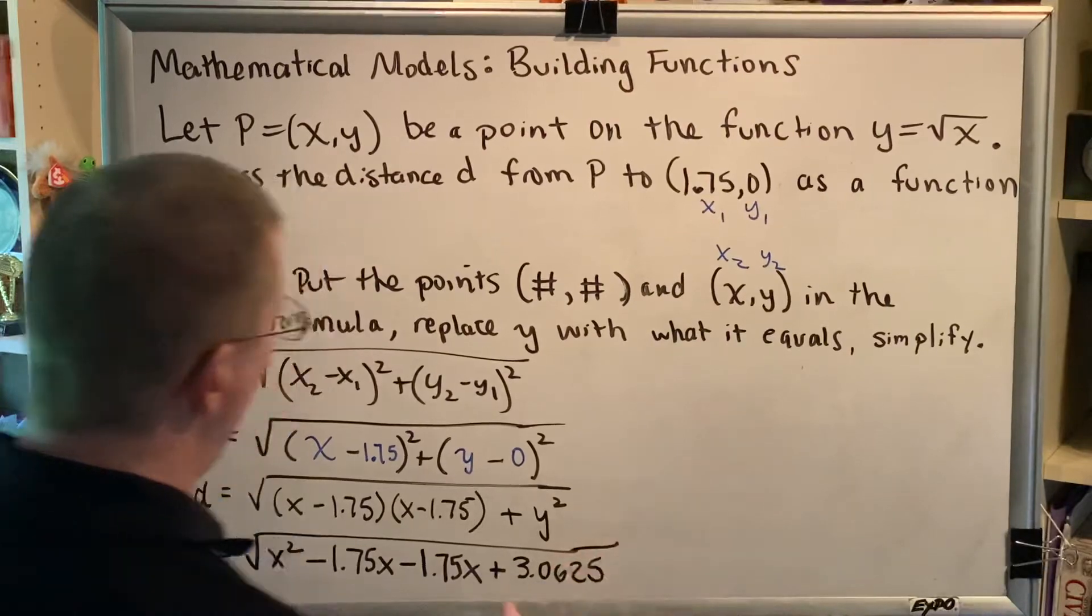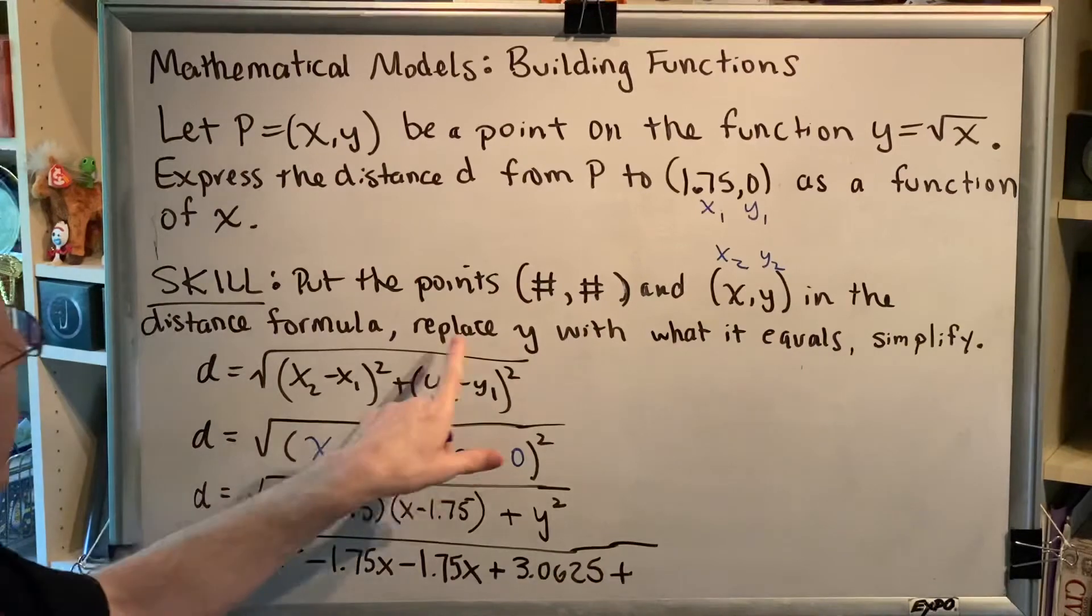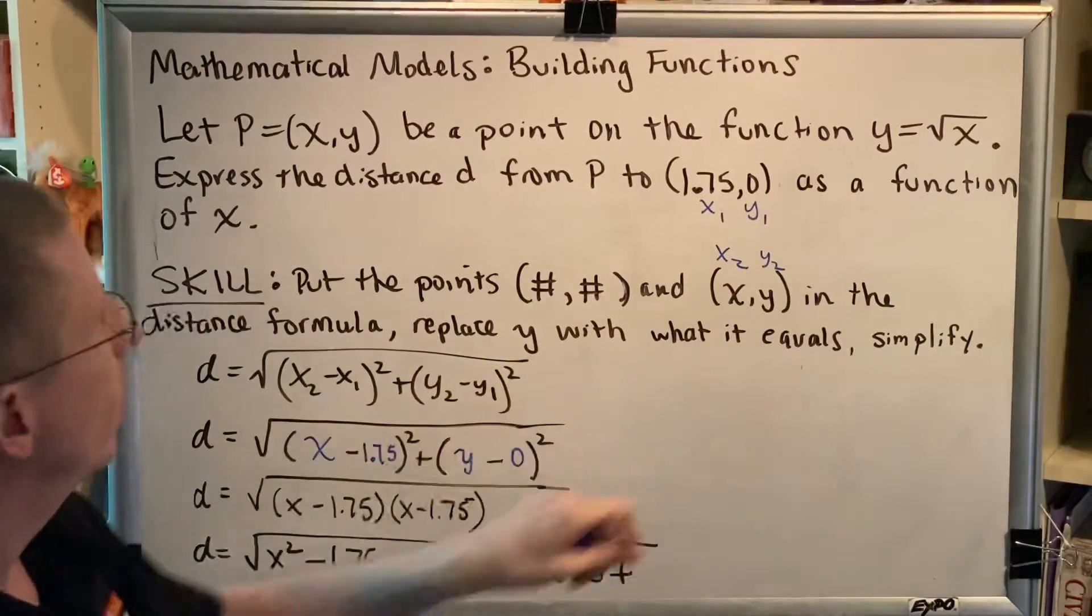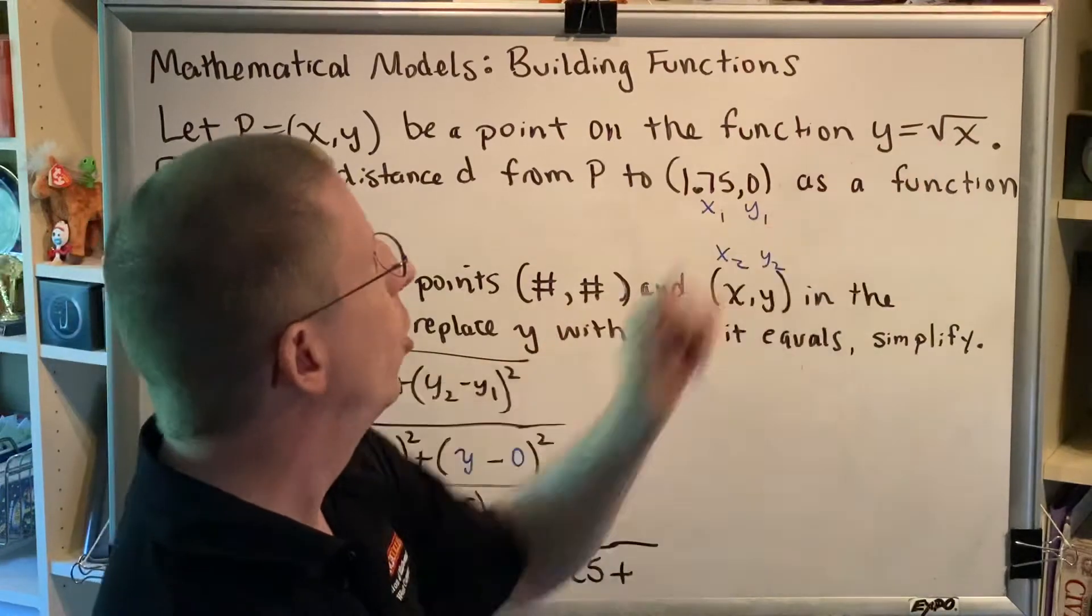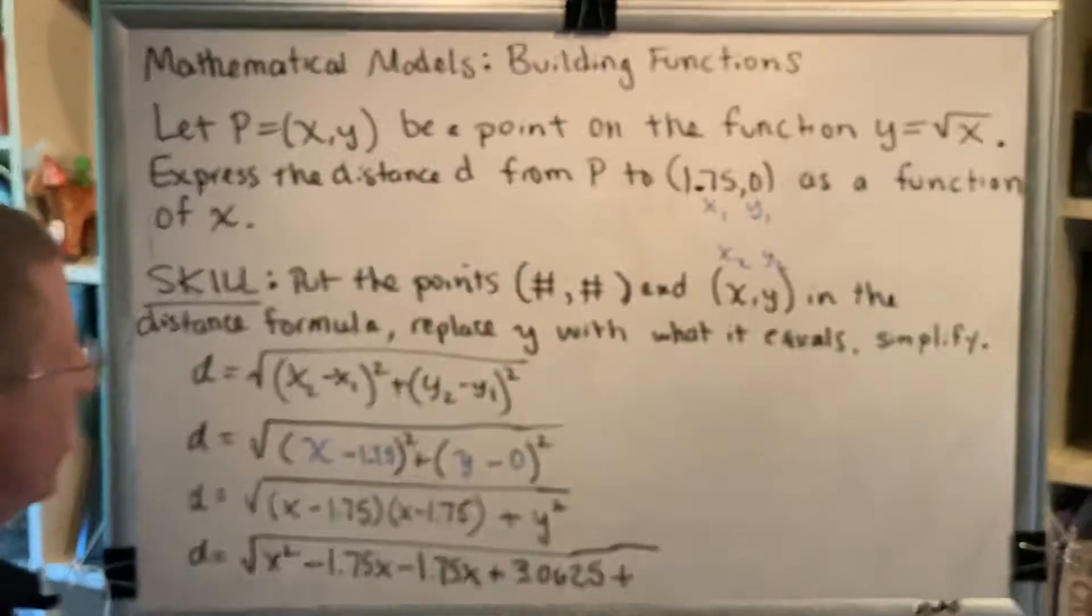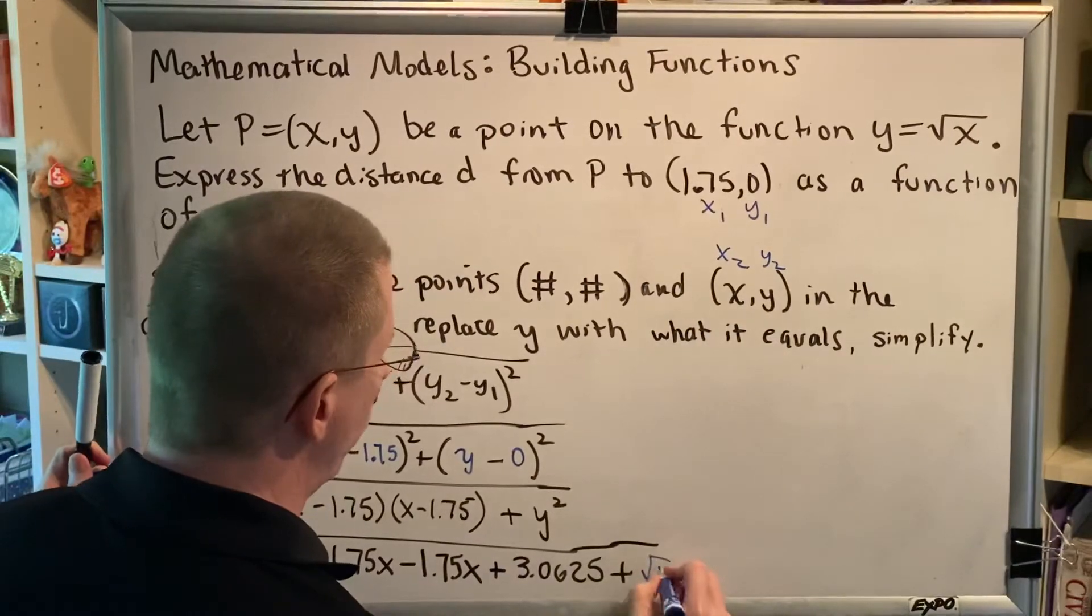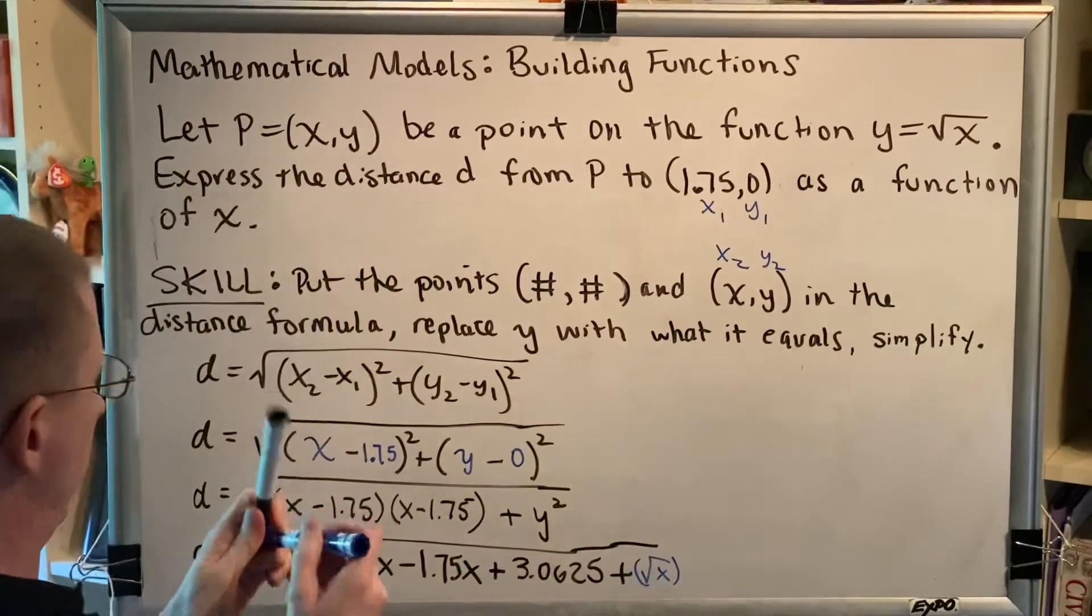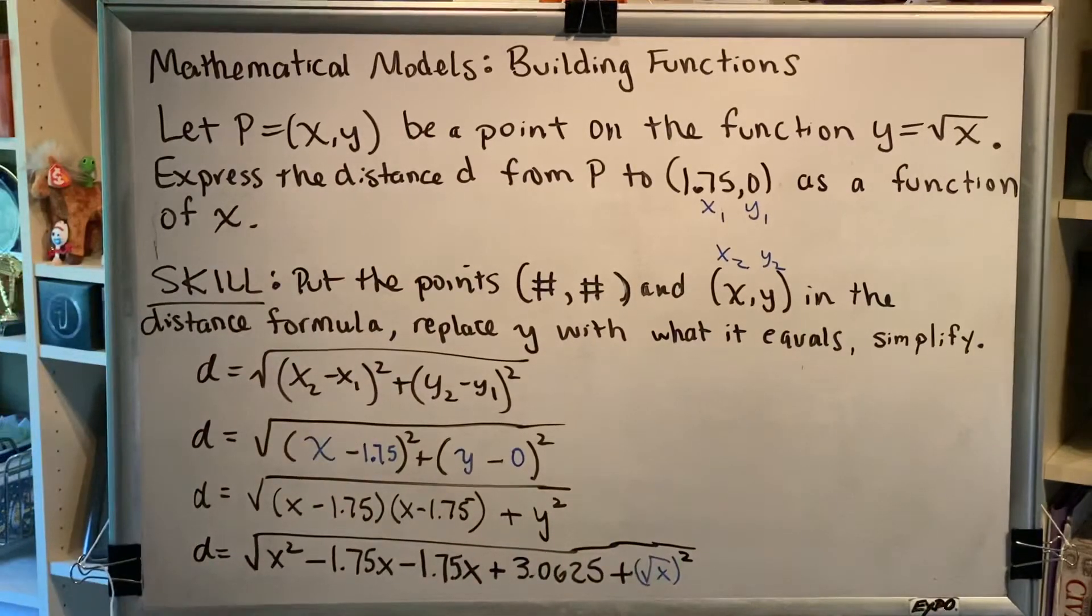Now I'm not done yet because I still have to do this plus y². Now this is the moment where I'm going to replace y with what it equals. In the given problem statement, I was told y equals the square root of x. So instead of y², I'm going to write (√x)².